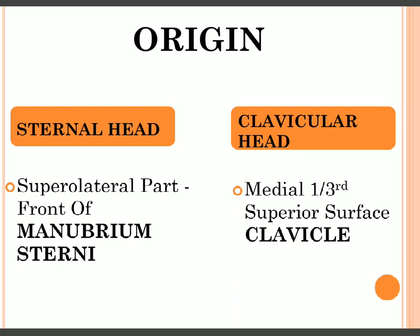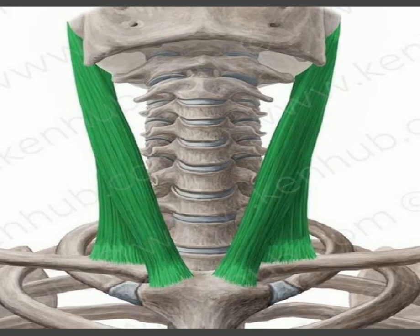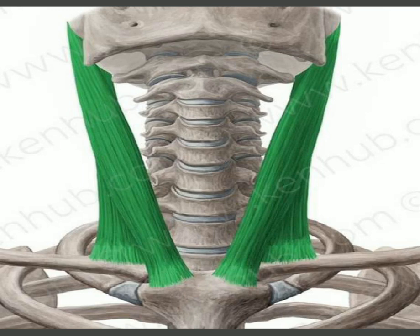In this image we can see the two heads of the sternocleidomastoid muscle. The sternal head takes origin from the front, superior lateral aspect of the manubrium sterni, while the medial aspect is also visible. The clavicular head takes origin from the medial one-third, superior surface of the clavicle.